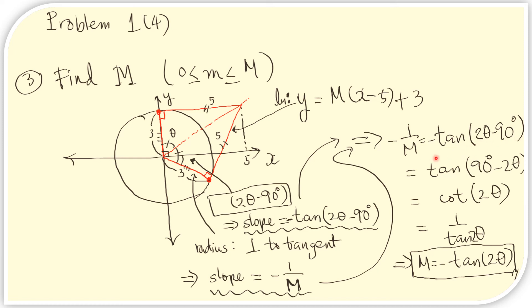We can simplify this equation. First, we factor out negative one to flip the terms. Because there is a negative sign, the negatives cancel to give a positive sign. This expression is the complement of 2 theta, which means we can express it using the co-function of tangent — which is cotangent. Since 2 theta is the complement of this angle, we use cotangent of 2 theta. Cotangent is the reciprocal of tangent. Therefore, this expression equals negative 1 over M, and we equate accordingly.